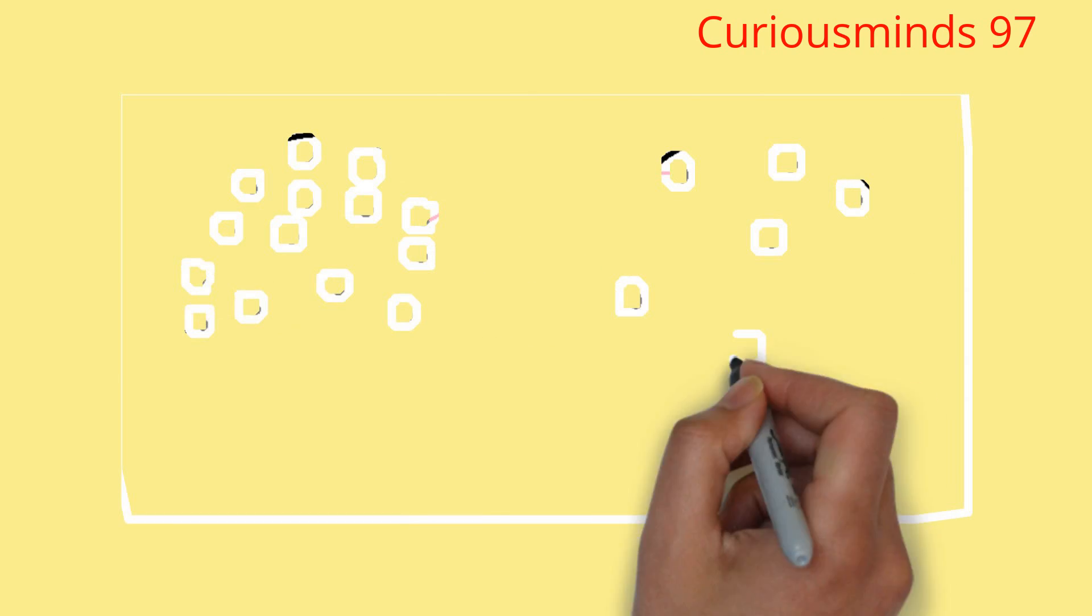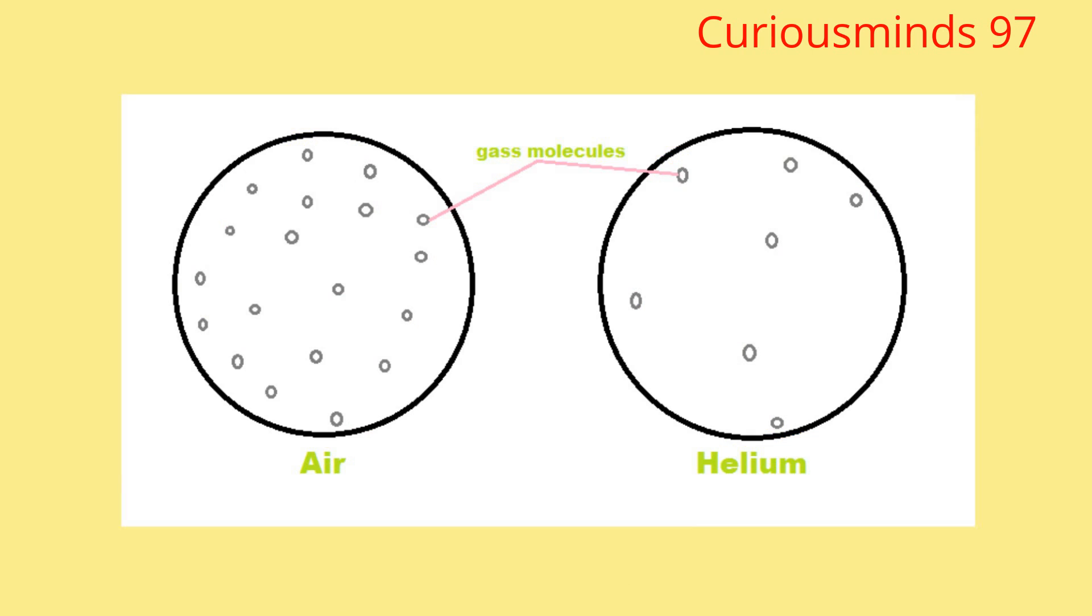Helium is 6 times less dense than air. This means that sound waves travel through it much faster than usual.